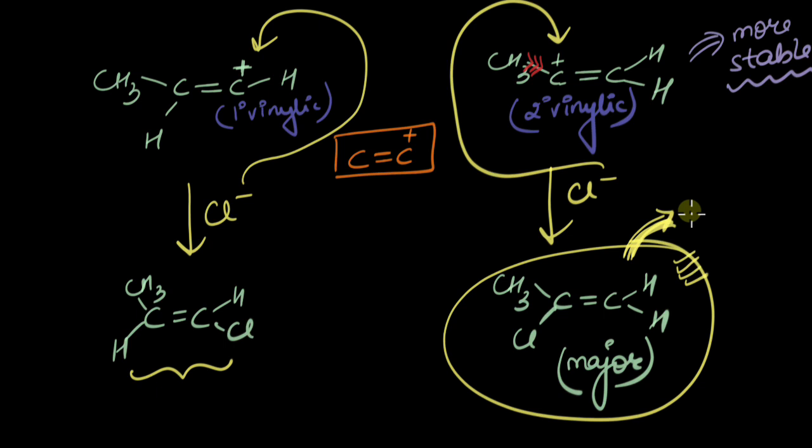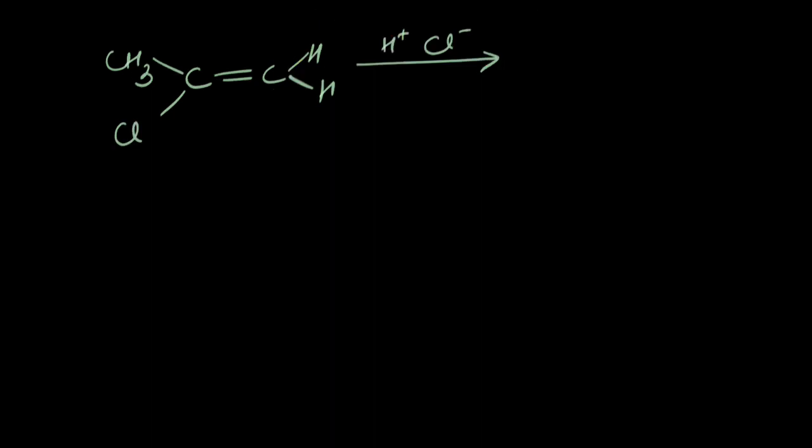This is my major product from the previous step. There's again H+ and Cl- ions. The pi electron density would want to go and grab that proton. But how will this bond break? Well, there are two ways again. It might break in a way which gets a positive charge here and a negative charge here, and this negative goes and grabs the proton. Or there might be a negative charge here and a positive charge here, and this carbon goes and grabs the proton.